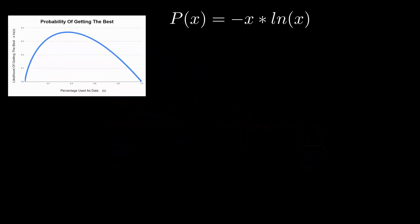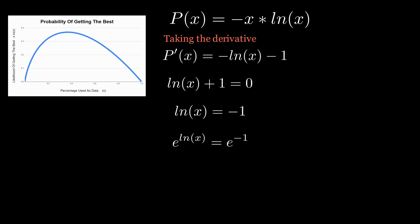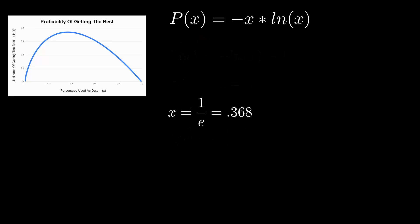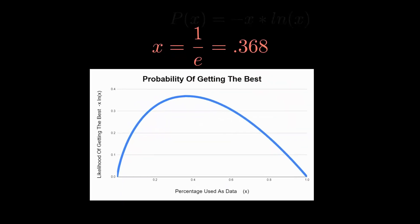We can take the derivative of this equation and set it equal to 0 and solve for x to see where the absolute maximum is. The derivative is negative natural log x minus 1. We simplify this by raising e to the power on both sides. On the left side, the e and natural log are inverse functions and cancel out, leaving just x. On the right hand side, we get e to the negative 1 power, which is 1 over e. The result is that the maximum probability occurs at x equals 1 over e, which is 36.8%.